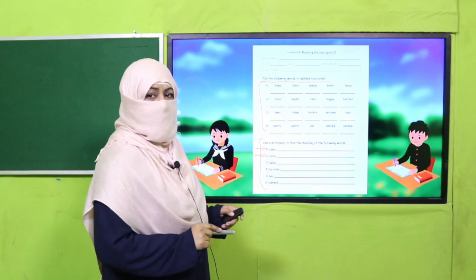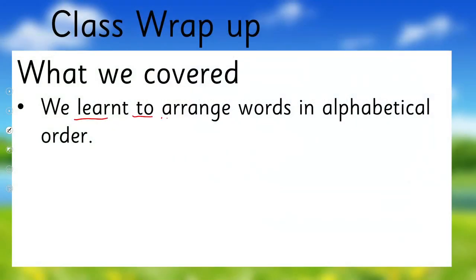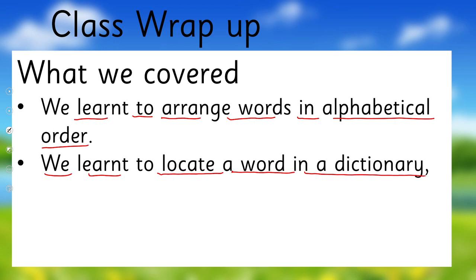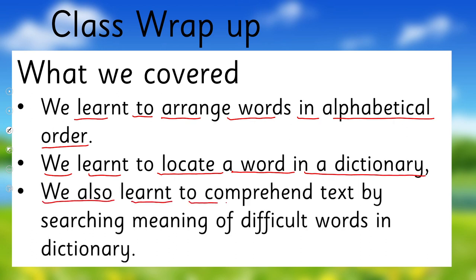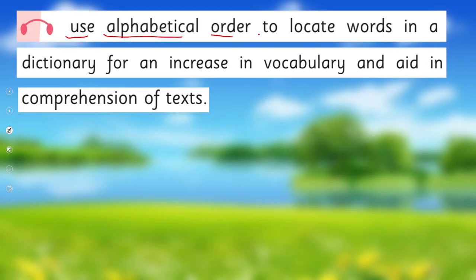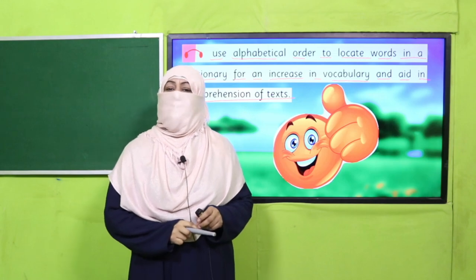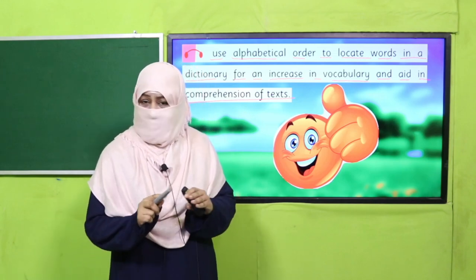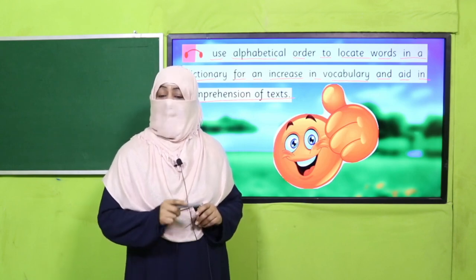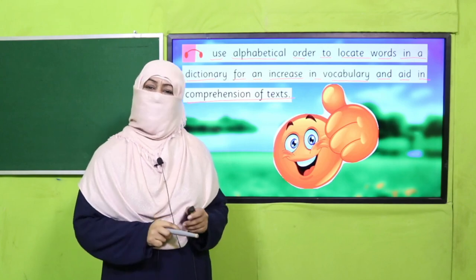What have we learnt today? We learnt to arrange words in alphabetical order, we learnt to locate a word in a dictionary, and we learnt to comprehend text by searching the meanings of difficult words in the dictionary. In this way we achieved our today's SLO: use alphabetical order to locate words in a dictionary for an increase in vocabulary and aid in comprehension of text. That's it for today. Tomorrow I'll come again for another interesting lesson. Keep learning, take very good care of yourself and the people around you. Thank you and Allah Hafiz.